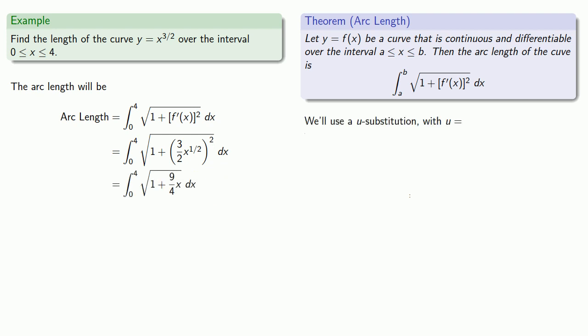To evaluate this, we'll use a u substitution. We'll try u equals 1 plus 9/4 x, and so du will be 9/4 dx. We need a 9/4 dx, so we'll put it in as long as we take it out by multiplying by 4/9.